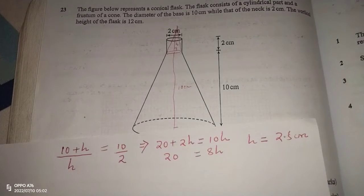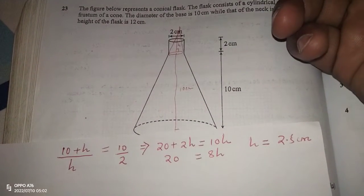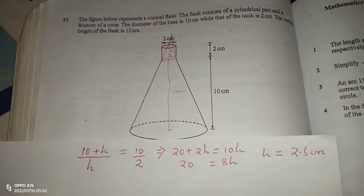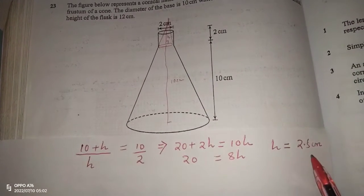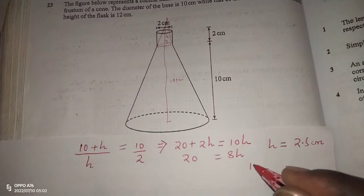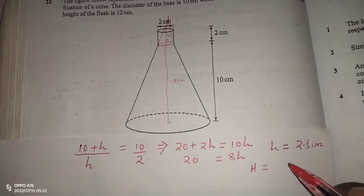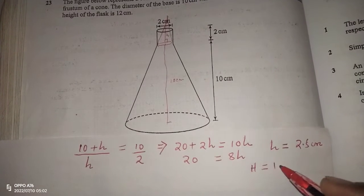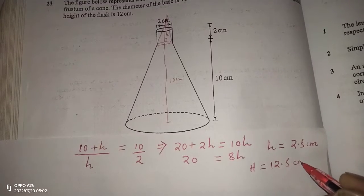The smaller cone that was cut off has a height of 2.5 centimeters, which means the total vertical height of the original cone was 10 + 2.5 = 12.5 centimeters.